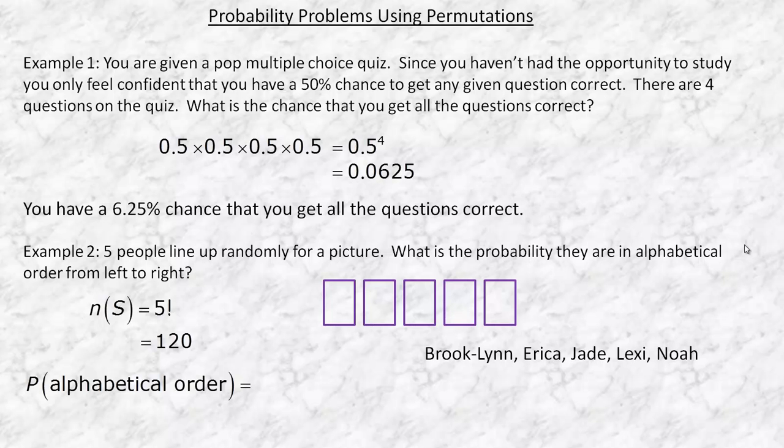But if we arrange those in any other order, if we just were to switch Lexi and Noah and put Noah here and Lexi in the end, then they're no longer in alphabetical order. For any given five people, there's only one alphabetical order. So if there's 120 ways to arrange these, 119 of them are not in alphabetical order, and only one is. So the chance would actually just be one in 120, because there's only one way to arrange any five names in alphabetical order.